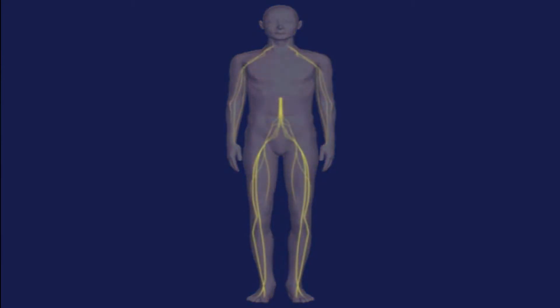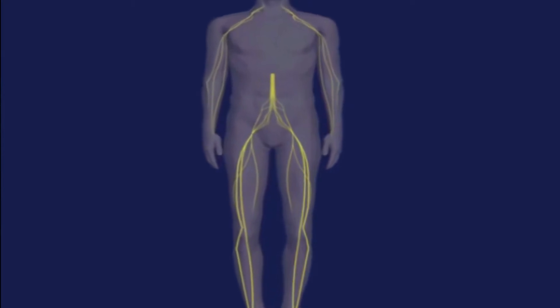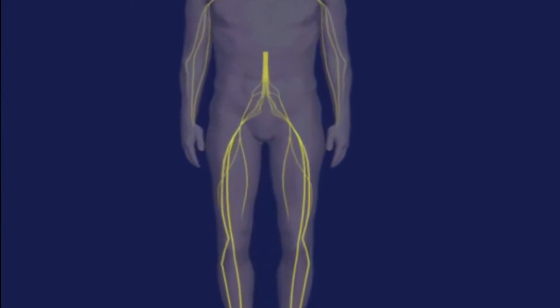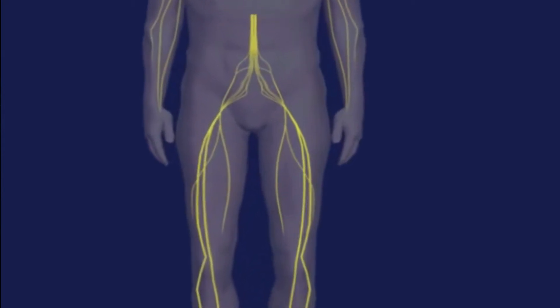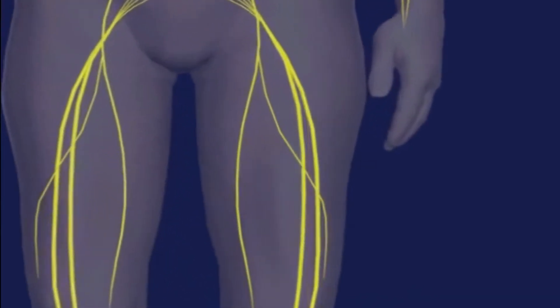Guillain-Barré syndrome is a disorder of the peripheral nervous system caused by the body's immune system. The syndrome often begins days or weeks after a flu-like illness.